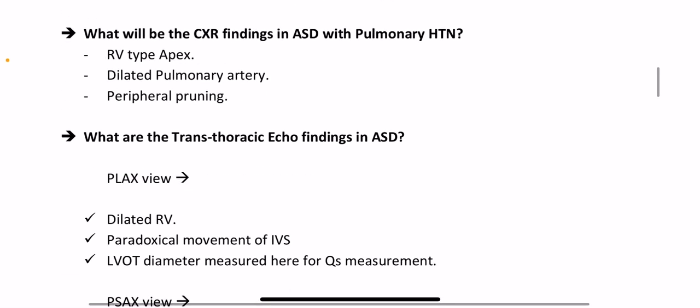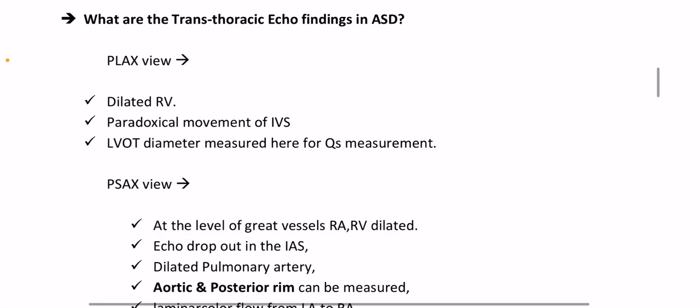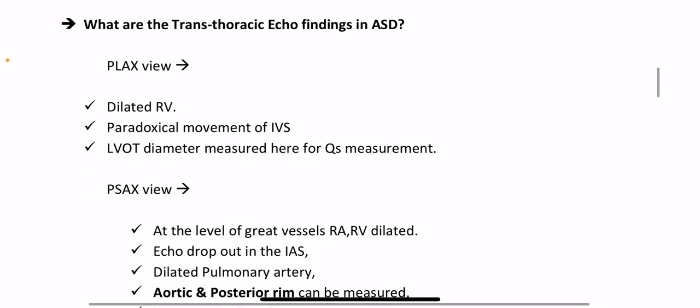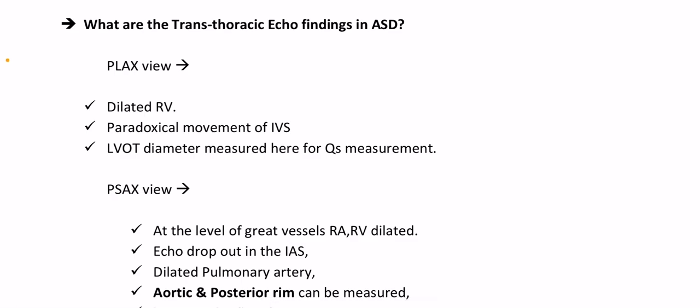What are the chest X-ray findings in ASD with pulmonary hypertension? RV-type apex, dilated pulmonary artery, and peripheral pruning. What are the transthoracic echo findings in ASD on parasternal long axis view? Dilated RV, paradoxical movement of the interventricular septum, LVOT diameter measured here for Qs measurement.